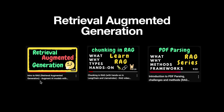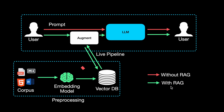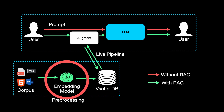In this series on retrieval augmented generation, we have looked into an introduction to RAG, chunking methods in RAG, and a brief introduction to PDF parsing, which is part of the data ingestion step of the RAG pipeline. In this video, let's move on to embedding models, which are crucial irrespective of the input we get — be it a PDF file, word document, or markdown — in order to store them in a vector database or feed large language models.